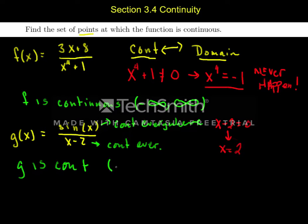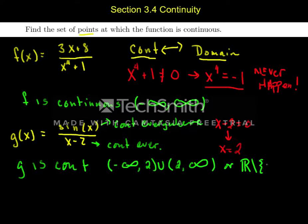In interval notation that's negative infinity to 2, union 2 to infinity. Or in set notation, all real numbers except the point 2. Those are good ways of describing all the points at which g is continuous.